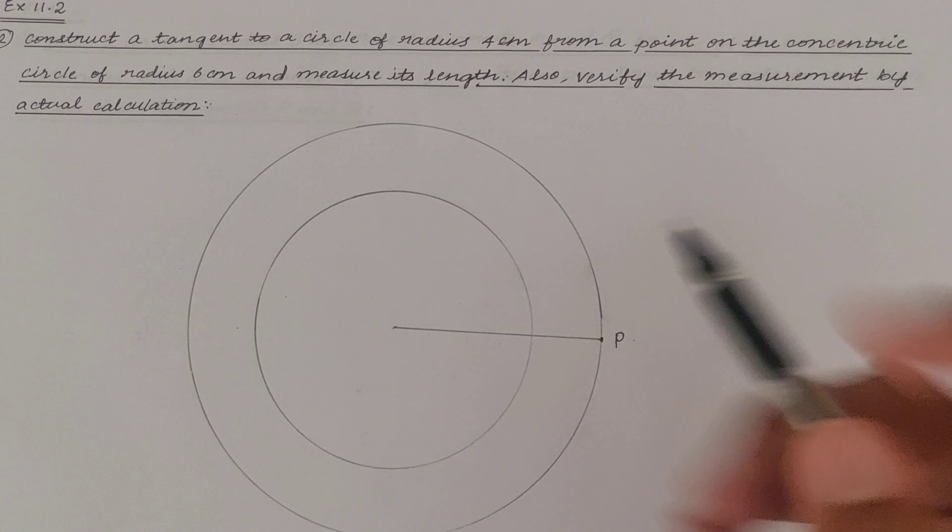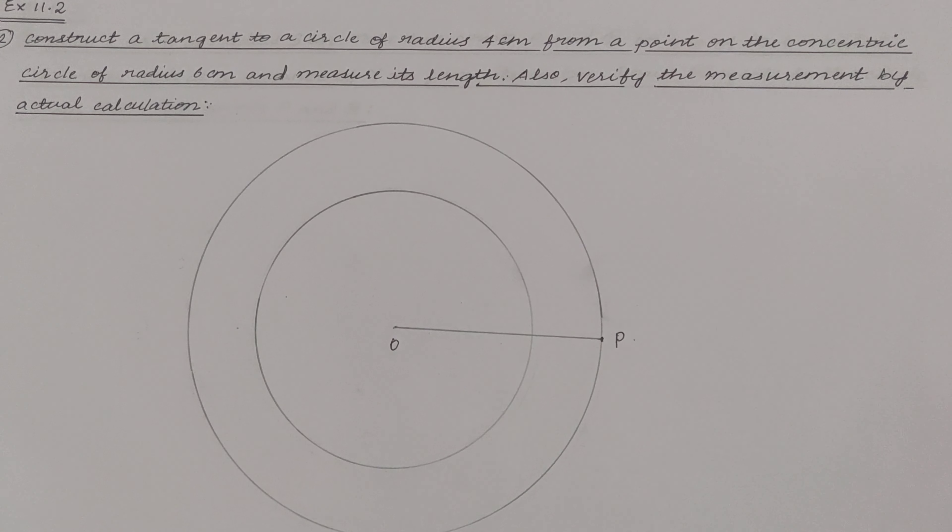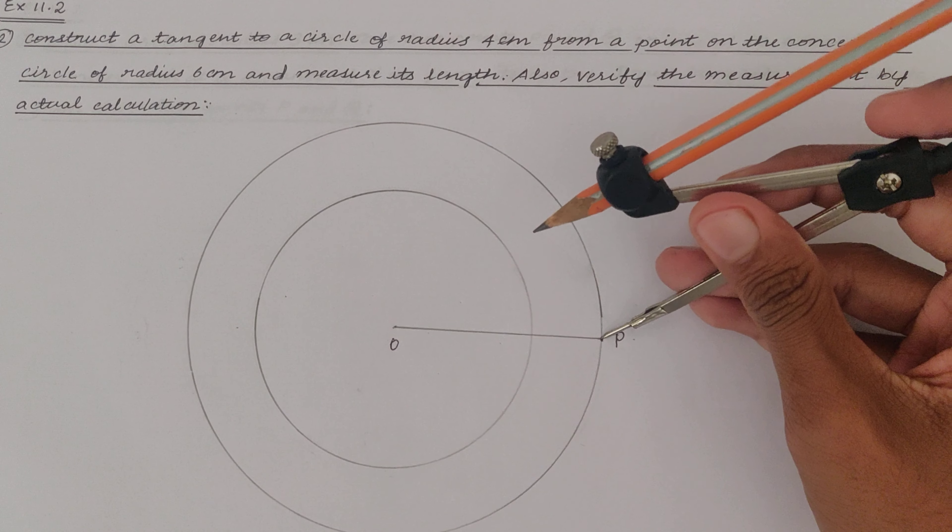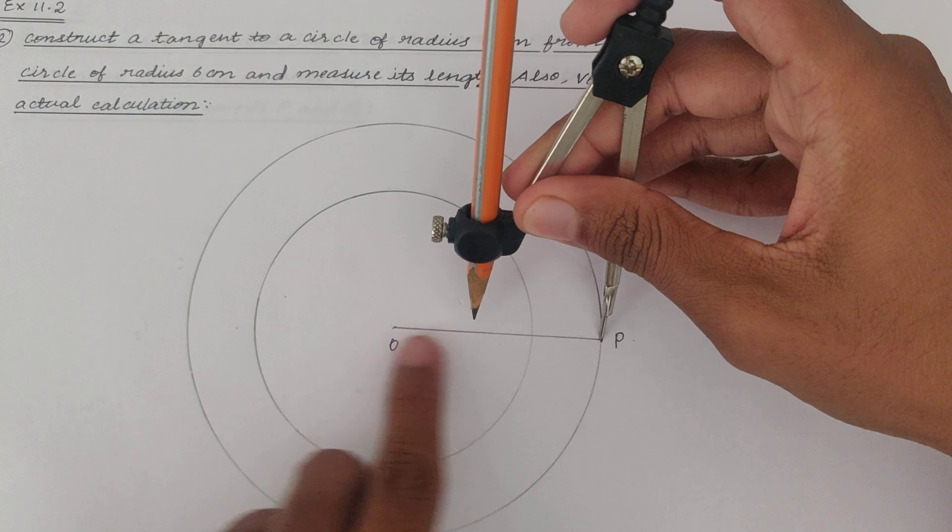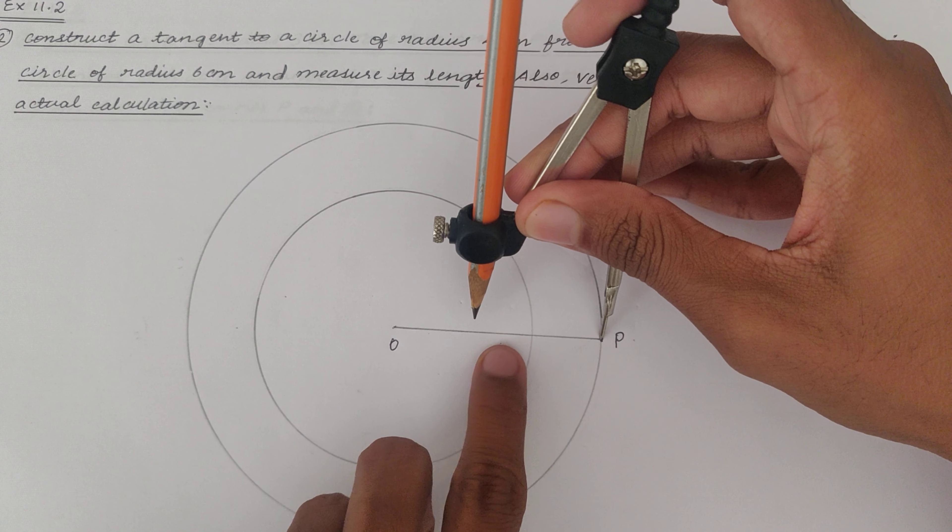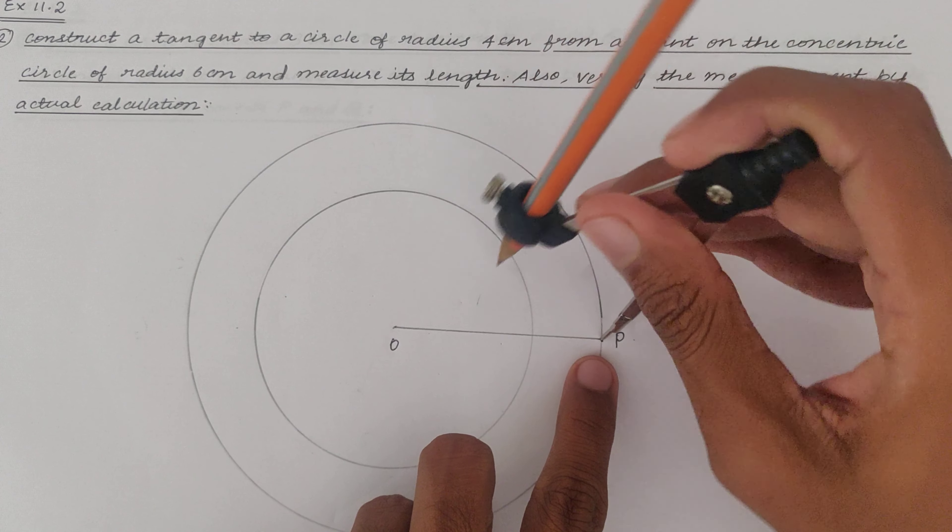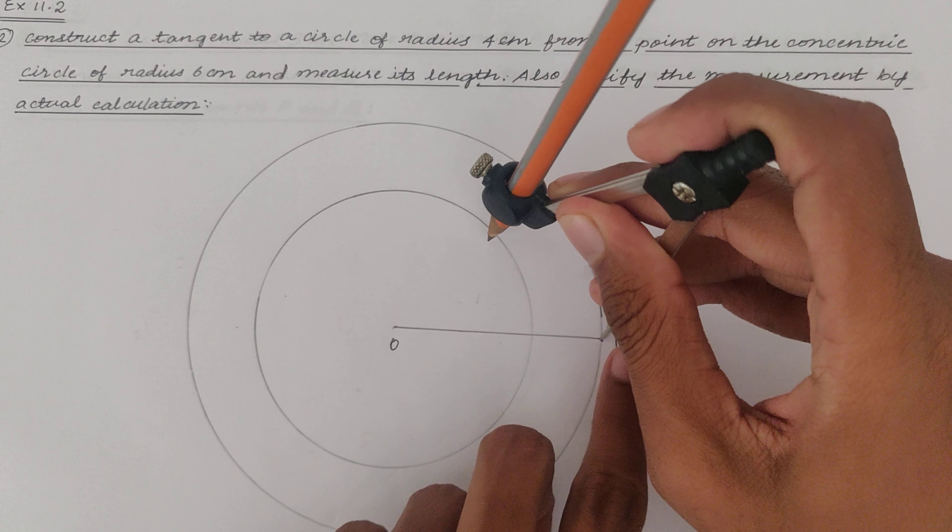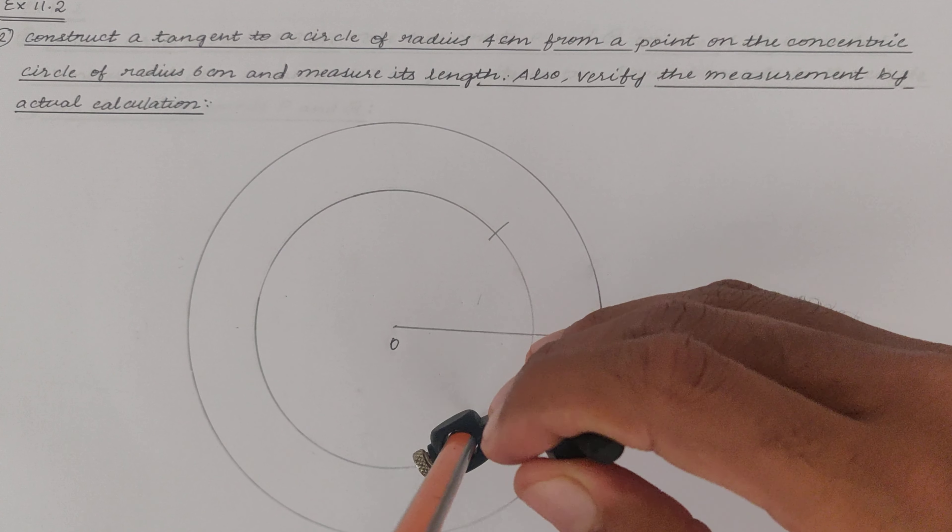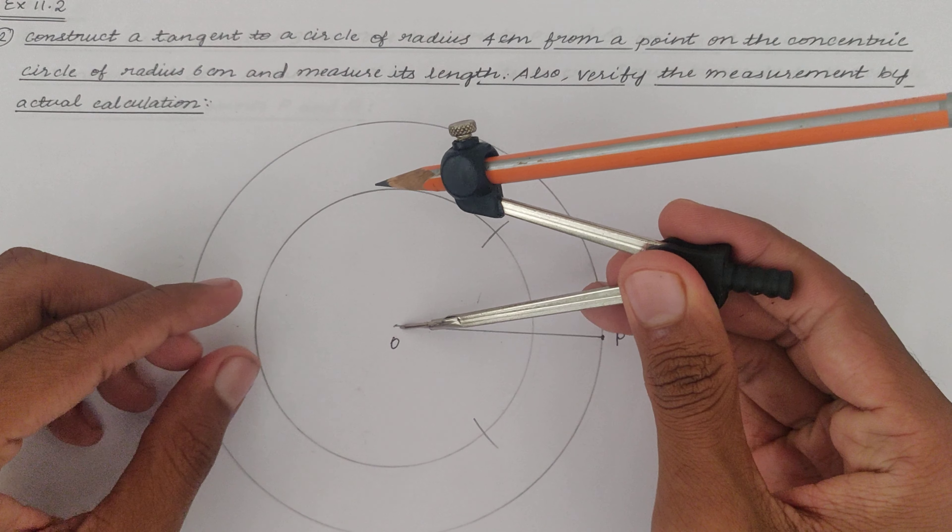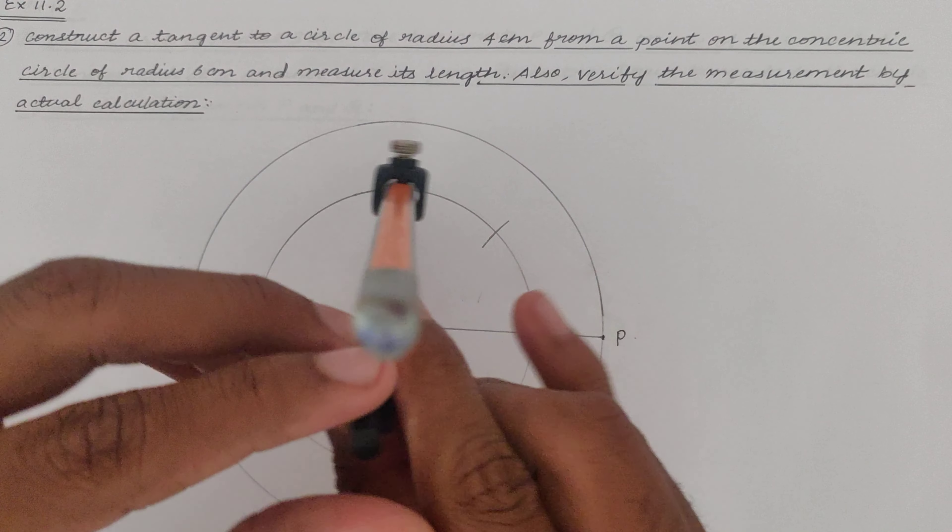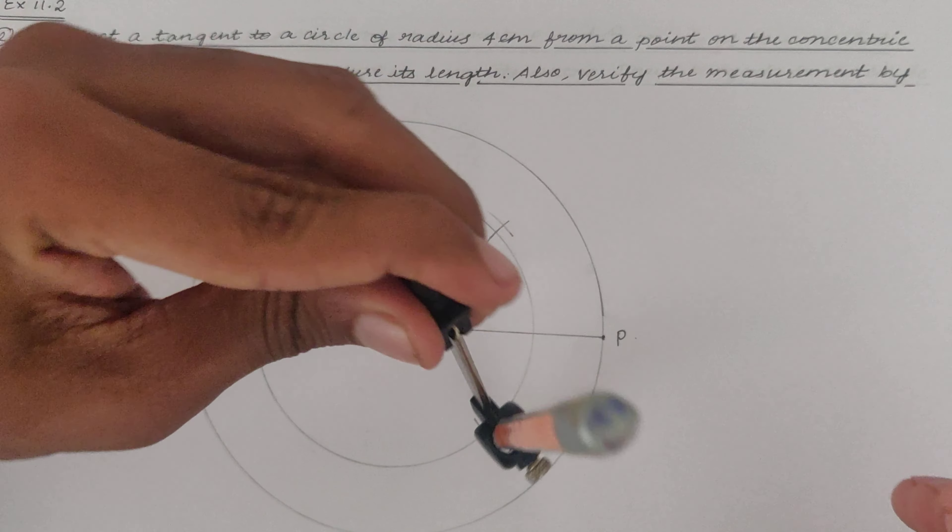Then what we have to do is from the point P a little more than half, a little more than midway between O and P, we have to draw arcs at the top and bottom like this. Similarly from O without changing the measurement, we need to draw two more arcs.